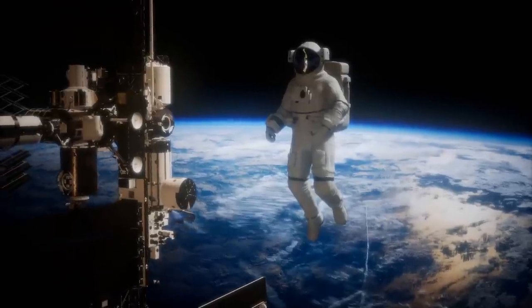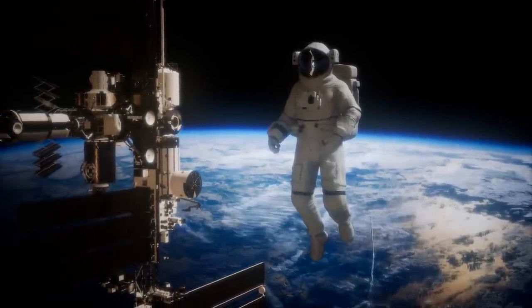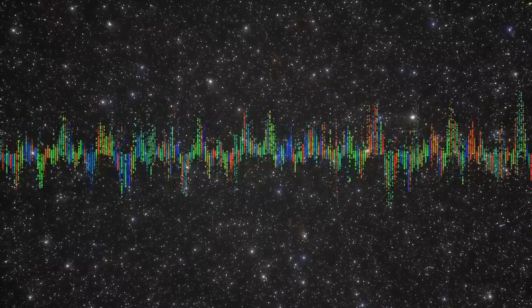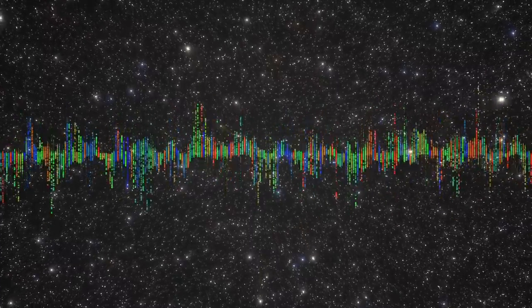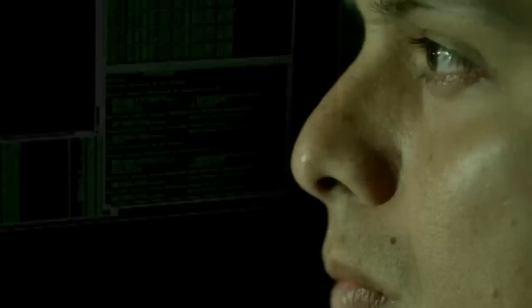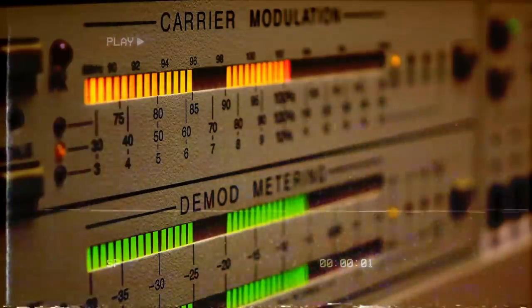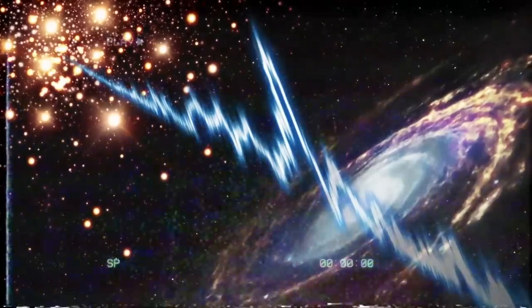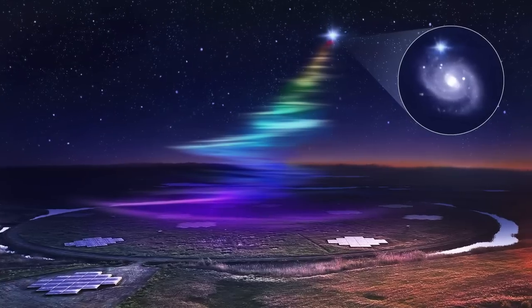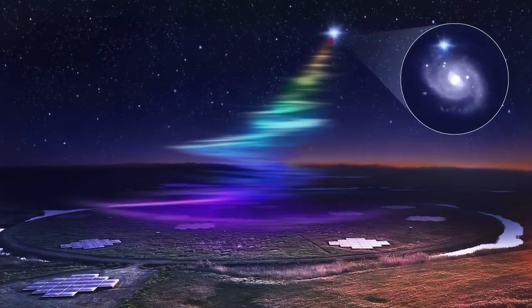Over the years, astronomers have followed up on the WOW signal, either trying to explain it away or relocate it. However, the signal is really just one of many similar detections made over the years, and once observatory computers became sophisticated enough for real-time follow-ups, the number of mystery signals dropped. Recently, astronomers have discovered fast radio bursts, FRBs, which were initially seen as strong radio signals that appeared just once.